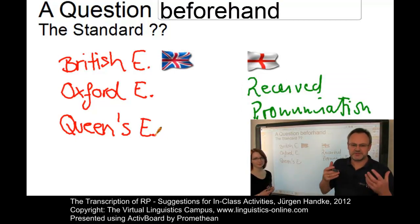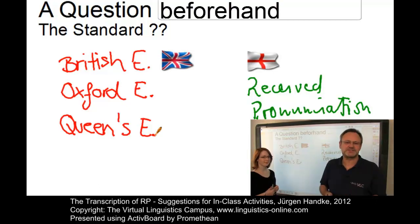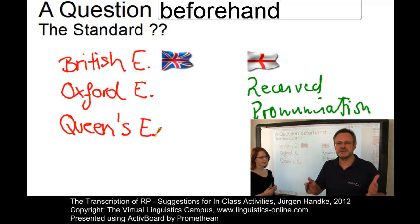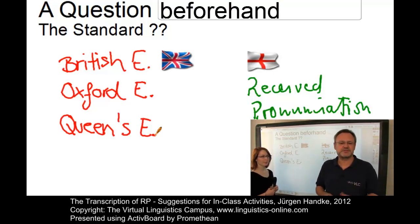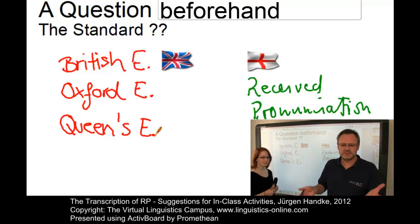Received pronunciation. The term received pronunciation has for many years been used to refer to the type of English which is the one accepted by the best society. RP is also the accent that Americans and possibly other foreigners would probably refer to as the typical British accent. Sometimes it is also referred to as BBC English, public school English, or even standard English. So it is neither a regional nor a personal, but a socially accepted type of standard English.